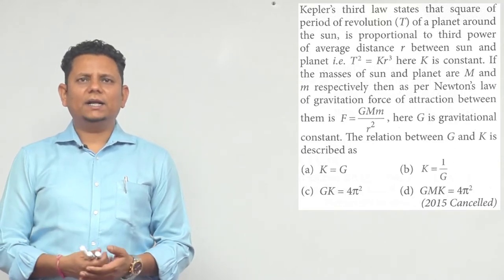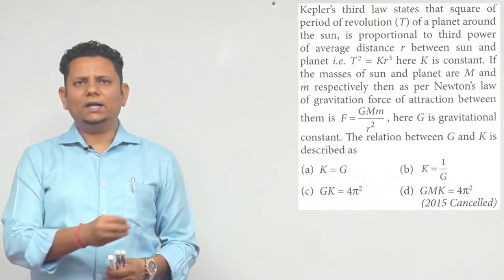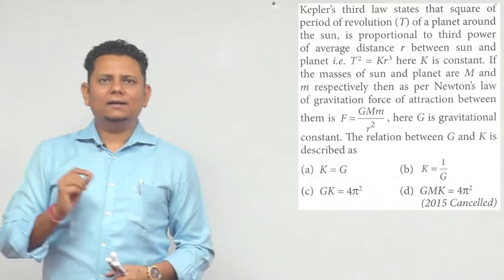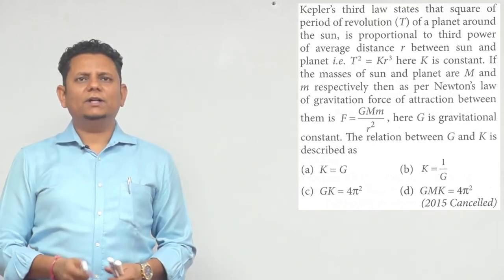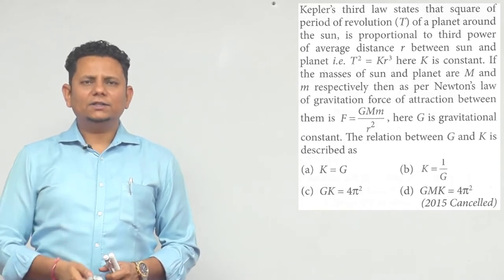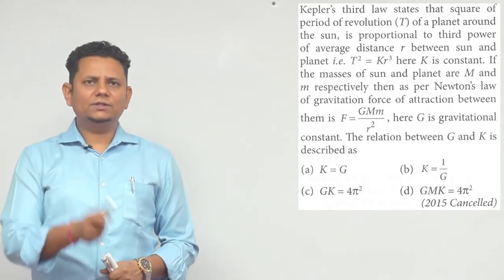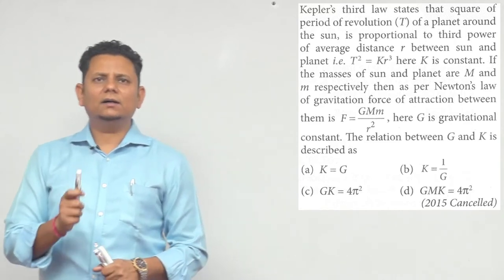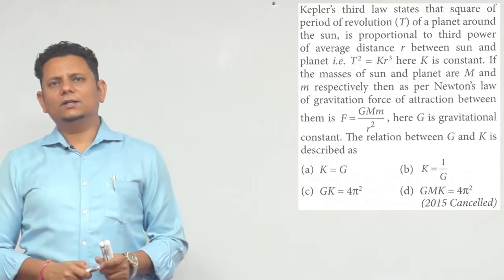If masses of sun and planet are M and small m respectively, then as per Newton's law of gravitation, force of attraction between them is F = GMm/r². Here G is the gravitational constant.